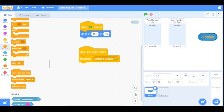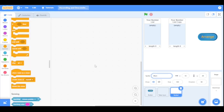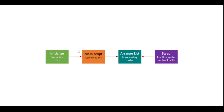Sorry, I forgot to name this sprite — we'll name it 'Button.' Now we will create a new sprite named 'Main.' The Main sprite is divided into four sections: Initialize, Main Script, Arrange List, and Swap. Initialize sets up all variables and lists; Main Script calls the functions; Arrange List arranges in ascending and descending order; and Swap swaps two numbers in a list.